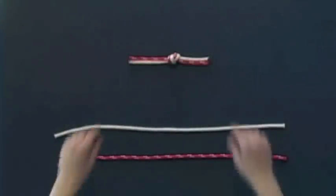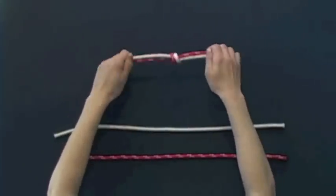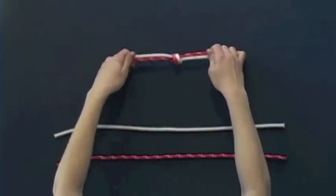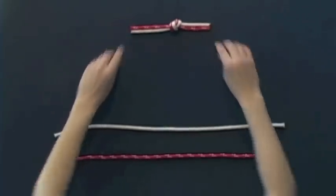This knot is the water knot. Often people have difficulty tying the double overhand knot. If you are having difficulty, you can substitute the water knot in its place.